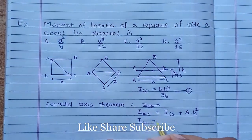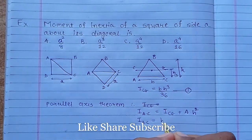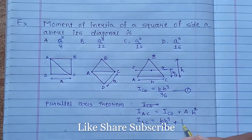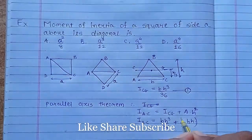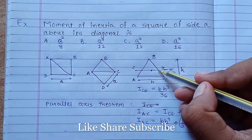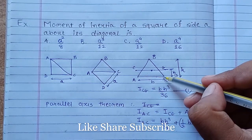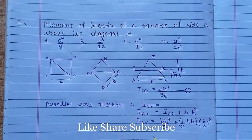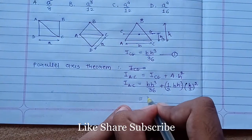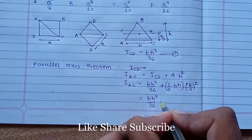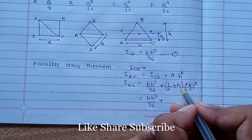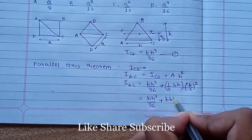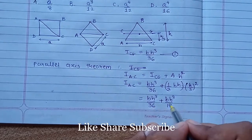So I_AC equals I_CG, which from equation 1 is b·h³/36, plus the area of the triangle — which is (1/2)·base·height — times the distance (h/3) squared. Simplifying: b·h³/36 plus b·h·(h²/9), which gives b·h³/36 plus b·h³/18. Combining these two terms gives b·h³/12.